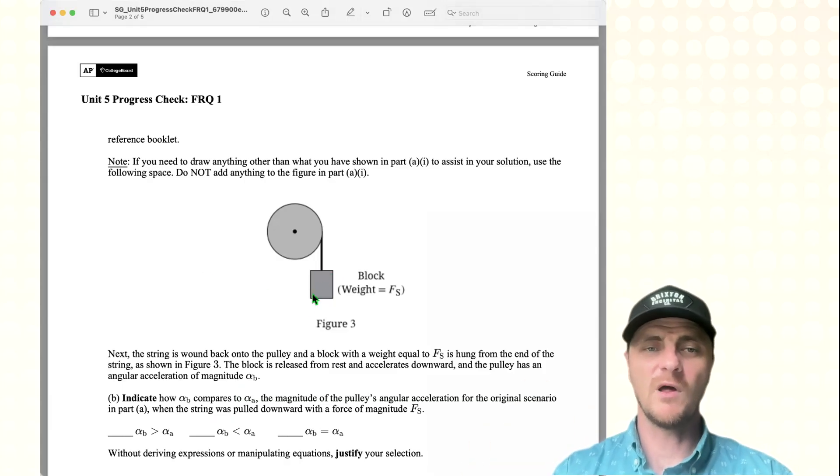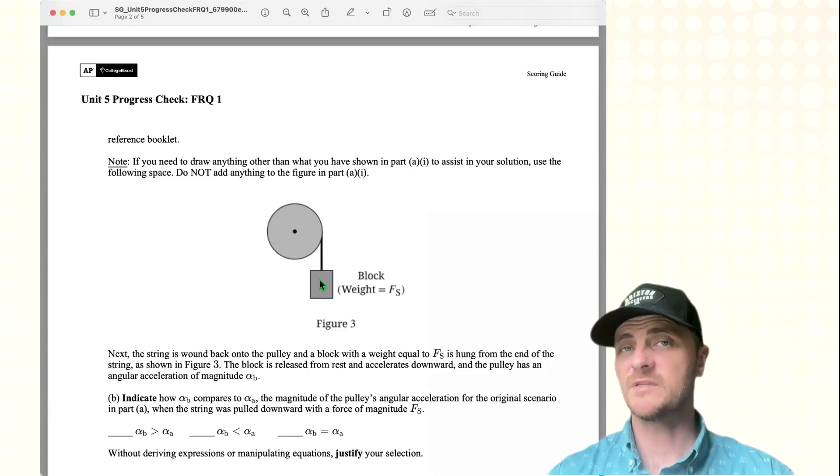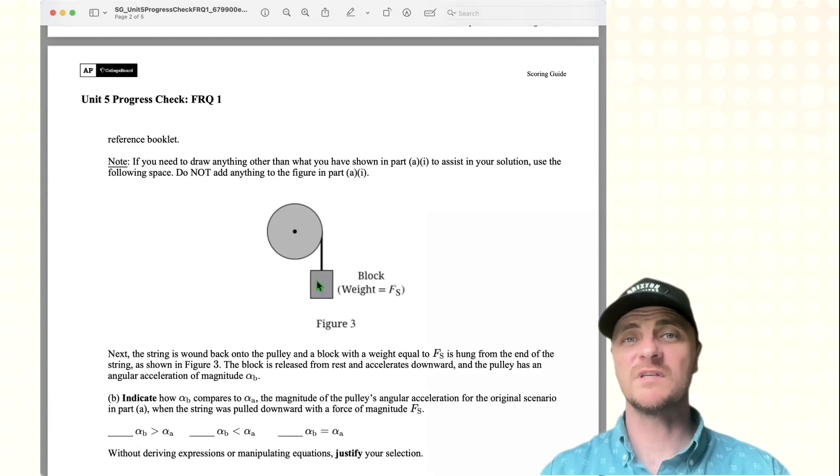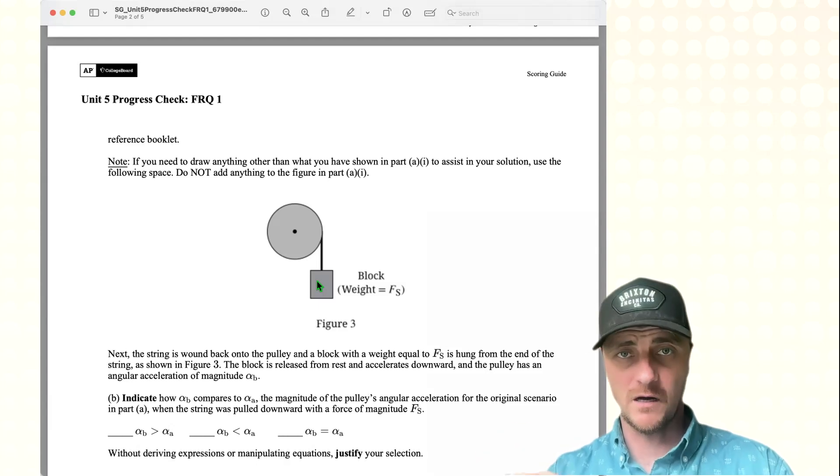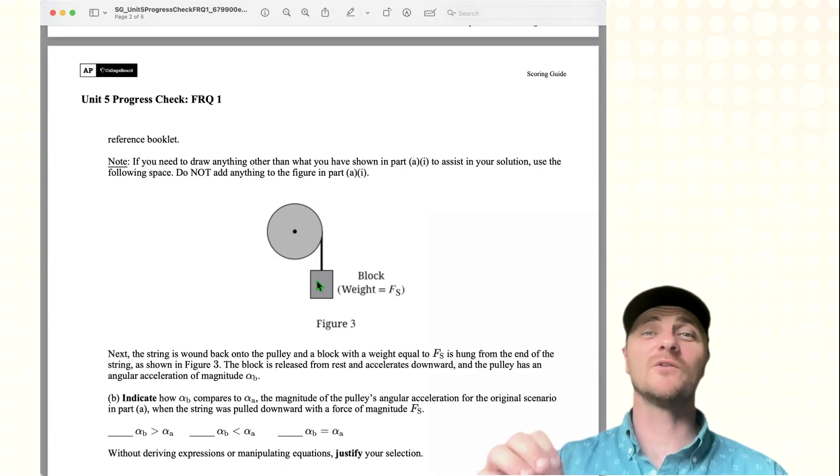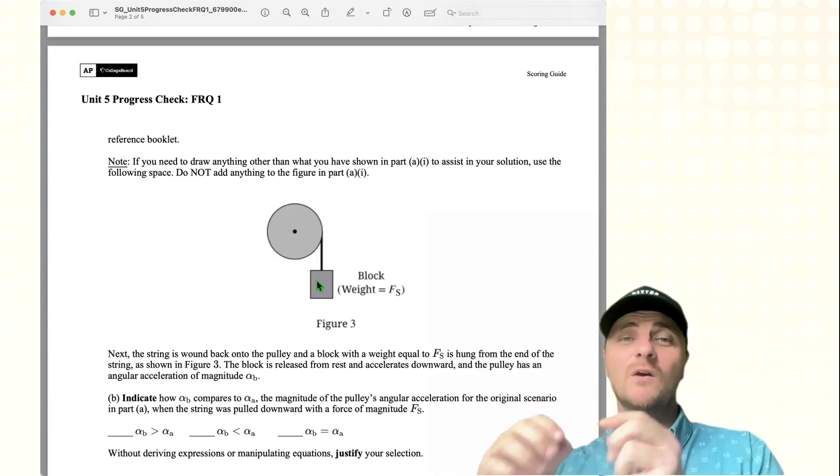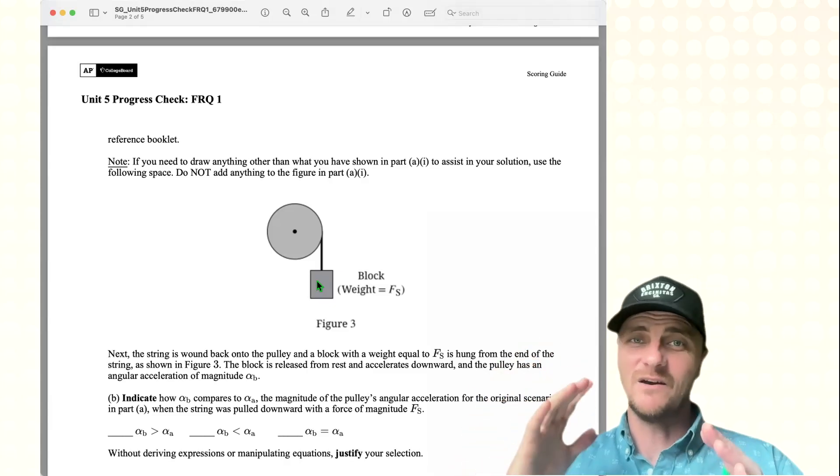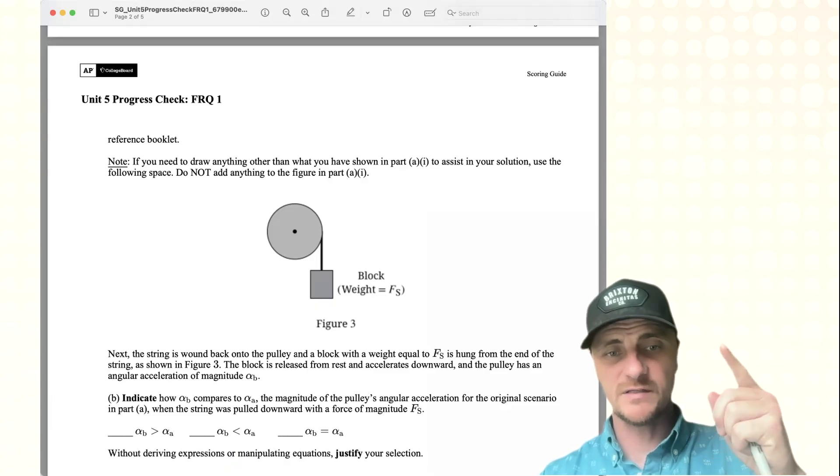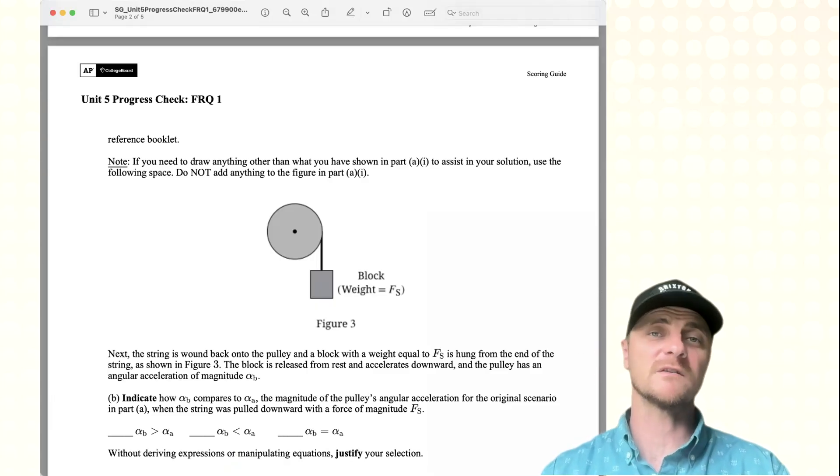Alpha B is less than alpha A. In the system with the block, there are two forces acting. There is the force of gravity downward, and an upward force of tension. Since these act in opposite directions, the net force is less than that in the previous scenario, part A. And since the net force in System 2 is less, thus creating a lesser net torque, then the angular acceleration (alpha B) will also be less. Okay, that's it. That was the justification. And notice we didn't derive expressions or manipulate equations as we justified our selection.